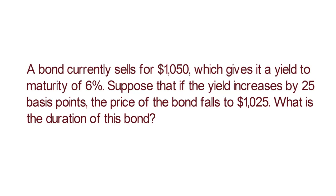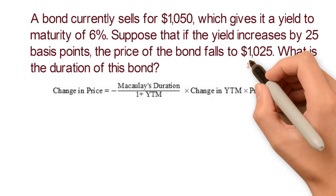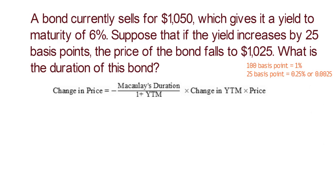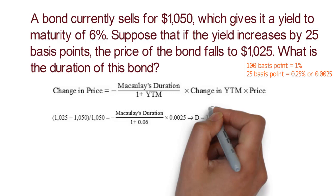In this example, since bond price and interest sensitivity information is given, we are going to use this formula. Please note that 100 basis points is equivalent to 1%, so 25 basis points equals 0.25% or 0.0025. The change in price is 1025 minus 1050 divided by 1050, equals negative Macaulay duration divided by 1 plus 0.06, times 0.0025. If you solve the equation for Macaulay duration, you get D equals 10.0952.